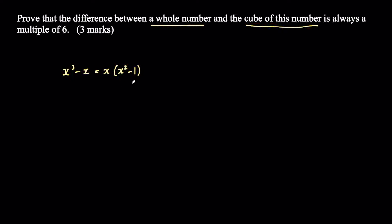You need to recognize that in those brackets we have what's called the difference of two squares — x is squared and one is a square number. With the difference of two squares, you can write x squared minus one as (x plus one)(x minus one), because if you expand those two brackets and simplify, you get x squared minus one. So x cubed minus x equals x times (x plus one) times (x minus one).